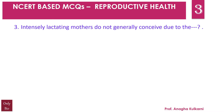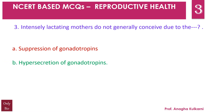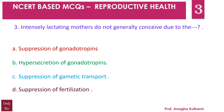Question number 3: Intensely lactating mothers do not generally conceive due to — A. suppression of gonadotropins, B. hypersecretion of gonadotropins, C. suppression of gametic transport, D. suppression of fertilization. The correct answer is A — intensely lactating mothers do not generally conceive due to the suppression of gonadotropins.